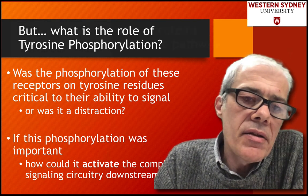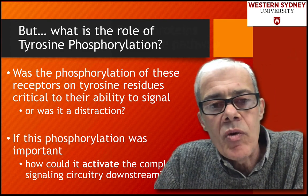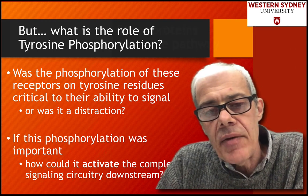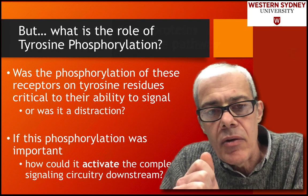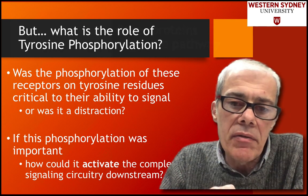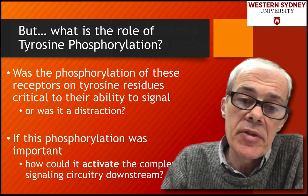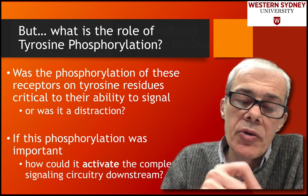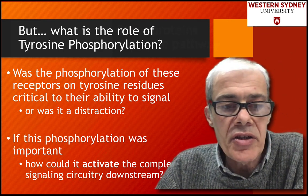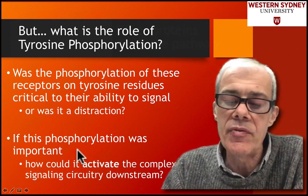To understand the signaling pathway in more detail, one key question is the role of the tyrosine kinase receptor. When one of these receptor molecules is activated, the receptor itself was observed to be phosphorylated — autophosphorylation of the receptor in response to binding of the growth factor. The question is, what role did this phosphorylation play in driving the signal?